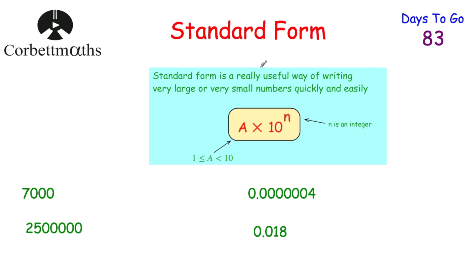Standard Form is a really useful way of writing very large or small numbers very quickly and easily. A number in Standard Form has to be in the form A × 10^n, where A is a number bigger than or equal to 1 but less than 10 — for instance 8, 9.2, or 1.77 — multiplied by 10 to the power of n, where n is an integer, such as 10², 10^7, or 10^(-5).